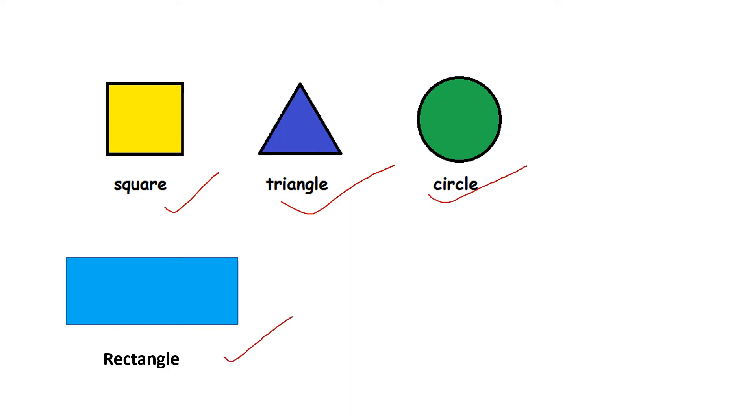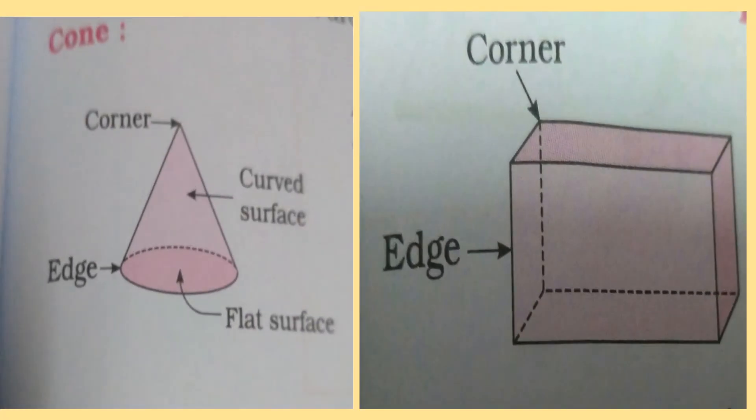These are basic shapes. Now let us learn some more shapes today. Let's start with Cone. A cone has one edge and one corner. The flat base of a cone is circular. The sloping surface of a cone turns continuously around. It is called a curved surface. Examples of cone: an ice cream cone, a mehendi cone are cone shaped objects.